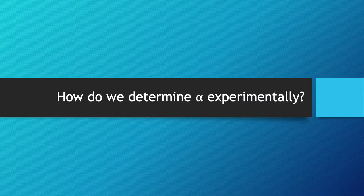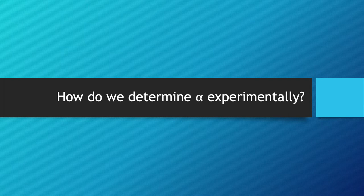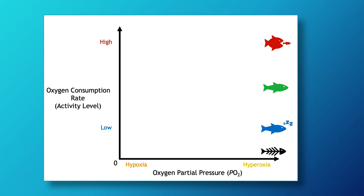The next question is, how do we determine this experimentally? We use a technique called respirometry in which an animal is placed in a sealed chamber and its oxygen consumption rate is measured over time. Typically, we plot the oxygen consumption rate derived from respirometry data as a function of oxygen partial pressure in the chamber, as it allows us to investigate the metabolic response to hypoxia.